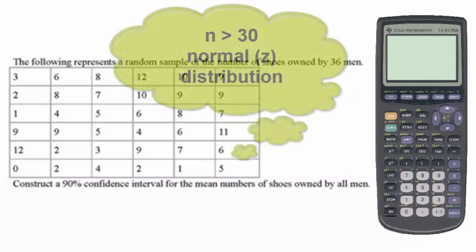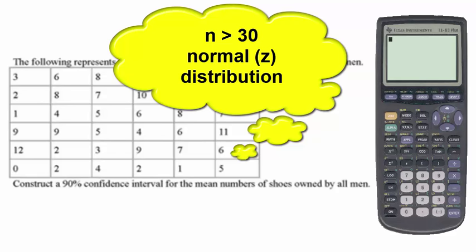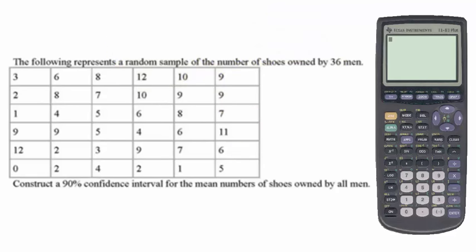Generally, when the sample size is more than 30, we would select the normal or z distribution to approach such a problem.